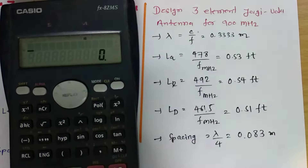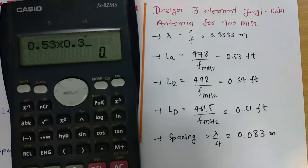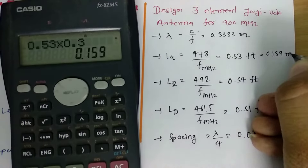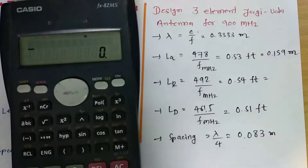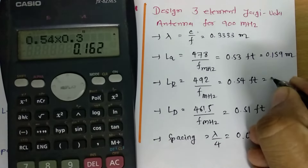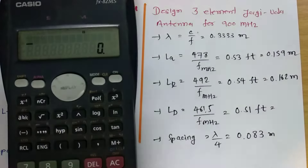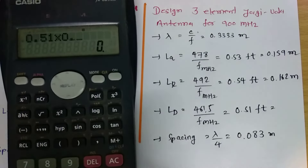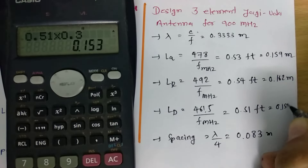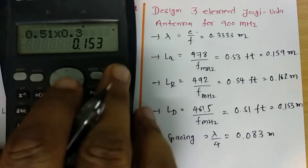Feet can be converted to meters by multiplying by 0.3. For example, 0.53 feet into 0.3 gives 0.159 meter. Similarly, 0.54 into 0.3 gives 0.162 meter, and 0.51 into 0.3 gives 0.153 meter. That is how we can translate from feet to meter.